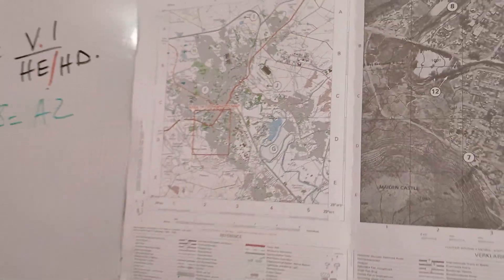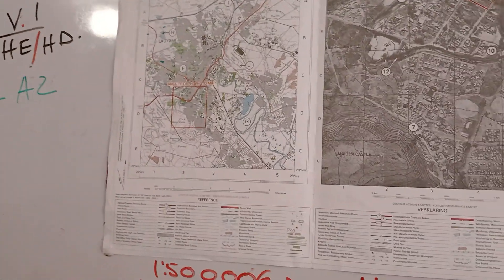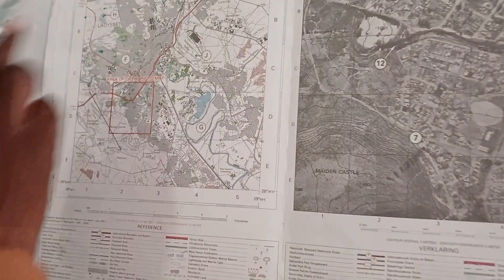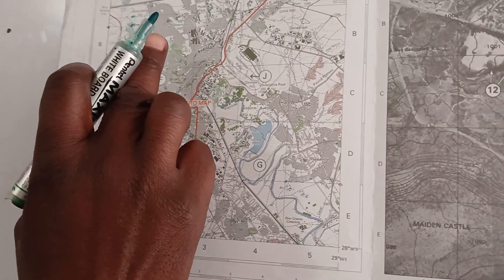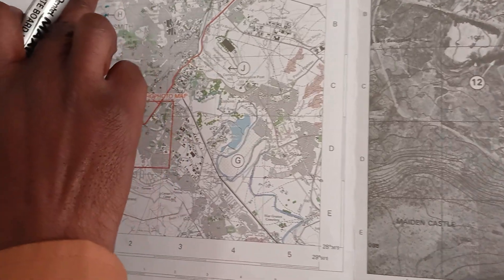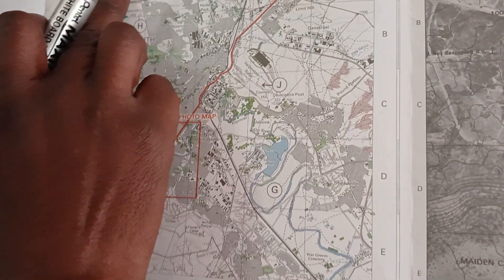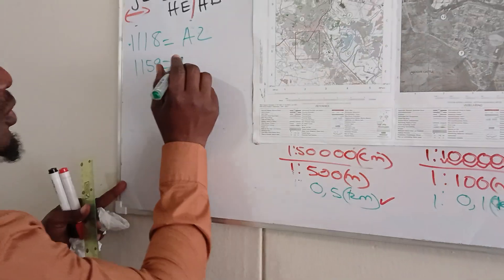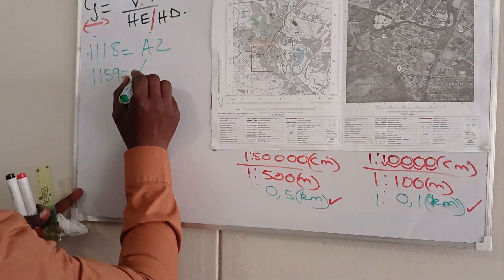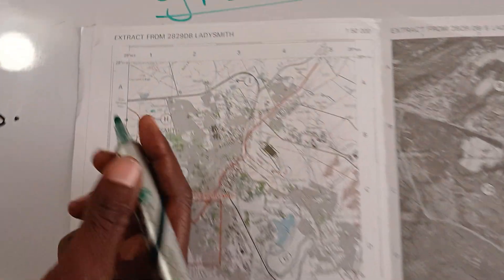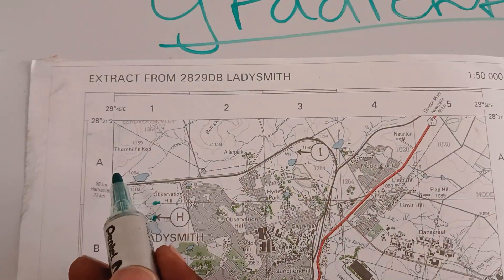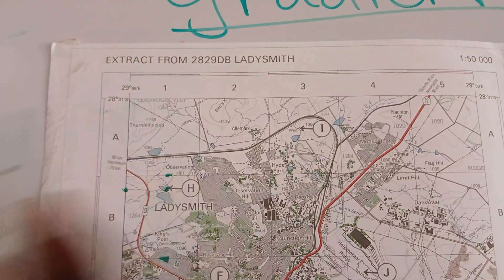And I'm also going to get the other spot height. I'll use 1,159 in block A1. You can see here — 1,159 in block A1.